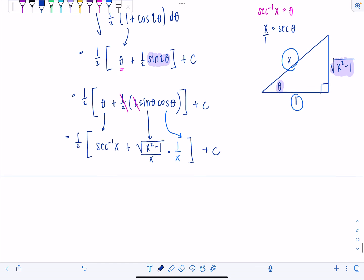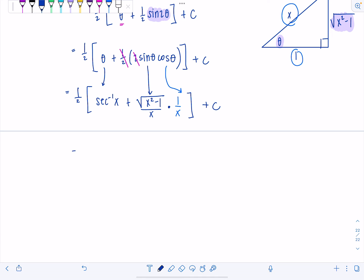Can we clean it up more? Yeah, just a wee bit. So I would write my final answer as one half. You can keep brackets. You could switch it to parentheses. I don't know, the brackets are looking cute. Let me keep them. Secant inverse of x plus rad x squared minus one over x squared plus c.